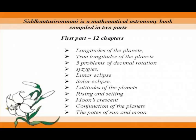Siddhanta Shiromani is a mathematical astronomy book compiled in two parts. The first part contains 12 chapters dealing with topics such as mean length of the planets, true length of the planets, three problems of diurnal rotations, lunar eclipse, solar eclipse, length of the planets, rising and setting, moon's questions, condition of the planets, and the paths of the sun and moon.